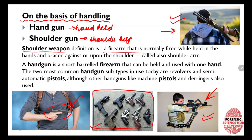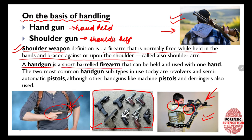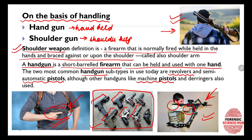A shoulder weapon is a firearm that is fired while held in the hands and braced upon the shoulder. A handheld firearm has a short barrel — such as pistols and revolvers — small enough to be held with one hand. The two most common handguns are revolvers and semi-automatic pistols.